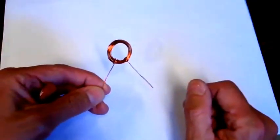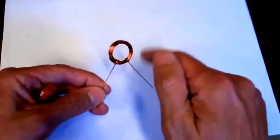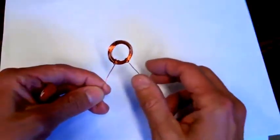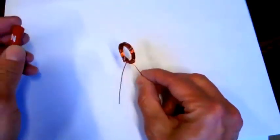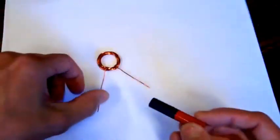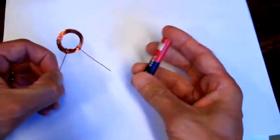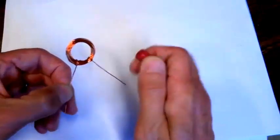So switching the direction of the current around the coil will switch the directions of the magnetic fields. In fact, the magnetic field associated with a current flowing through a coil is very similar to the magnetic field associated with a bar magnet.